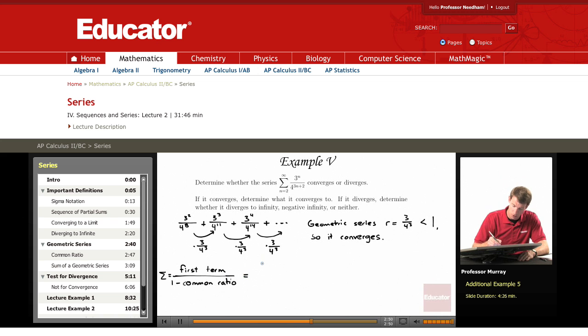So here our first term is 3 squared over 4 to the eighth. The common ratio is 3 over 4 cubed. So that's a little bit messy. We could clean it up a bit by multiplying top and bottom by 4 cubed.